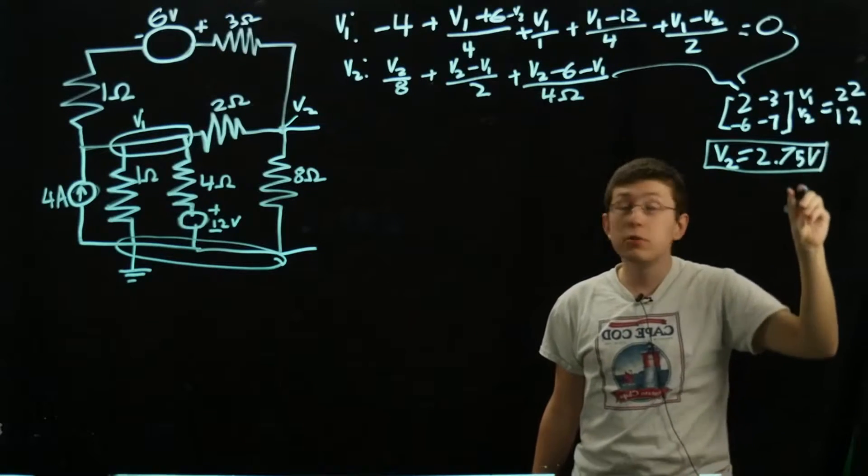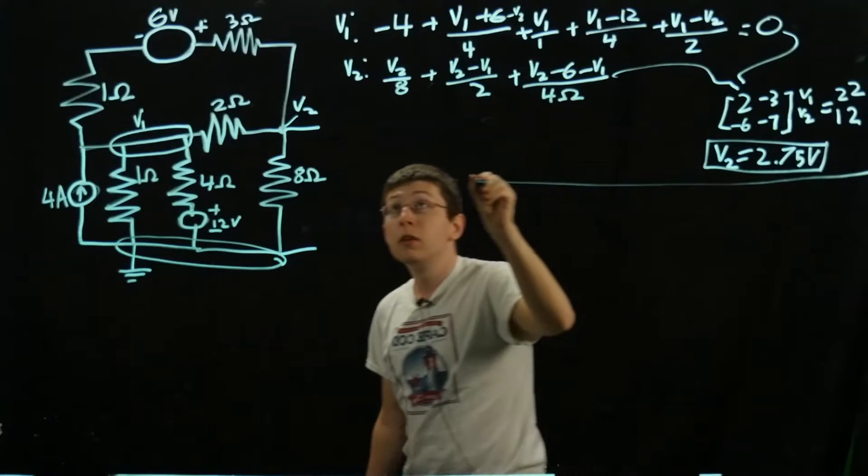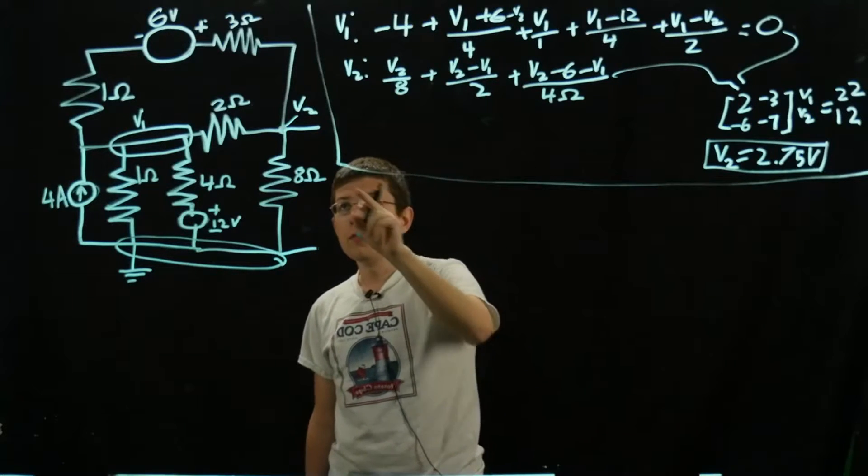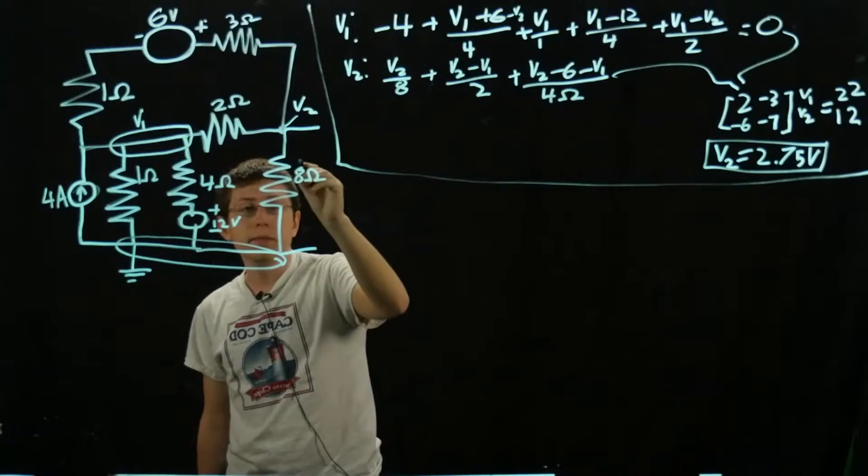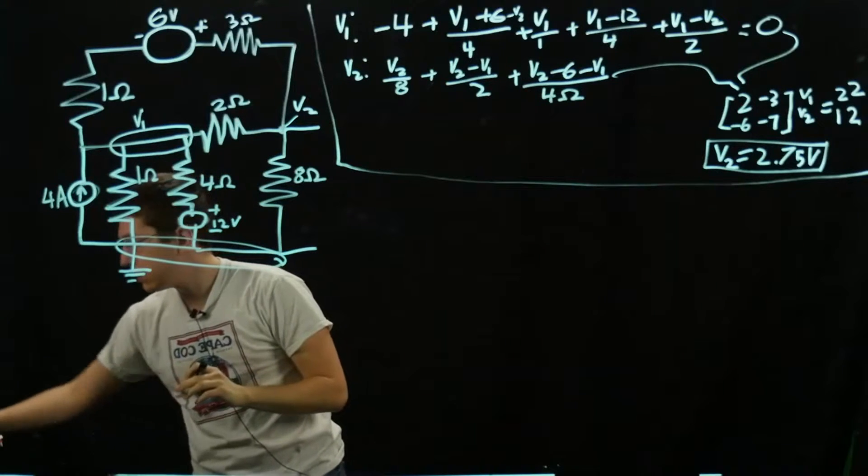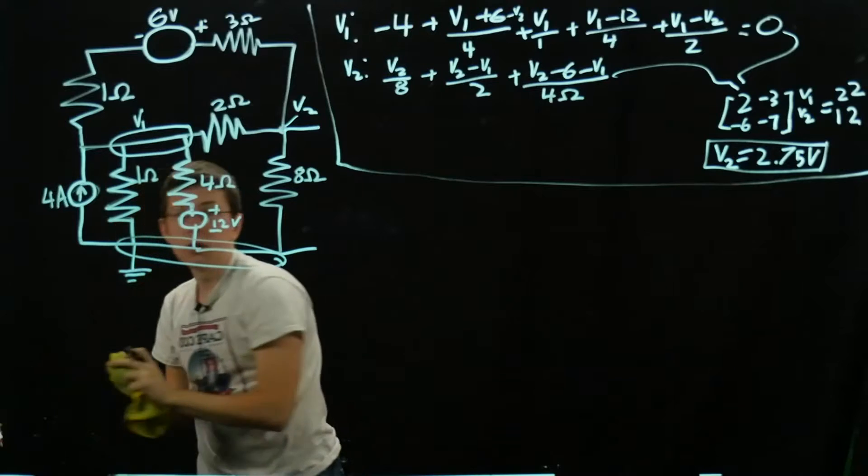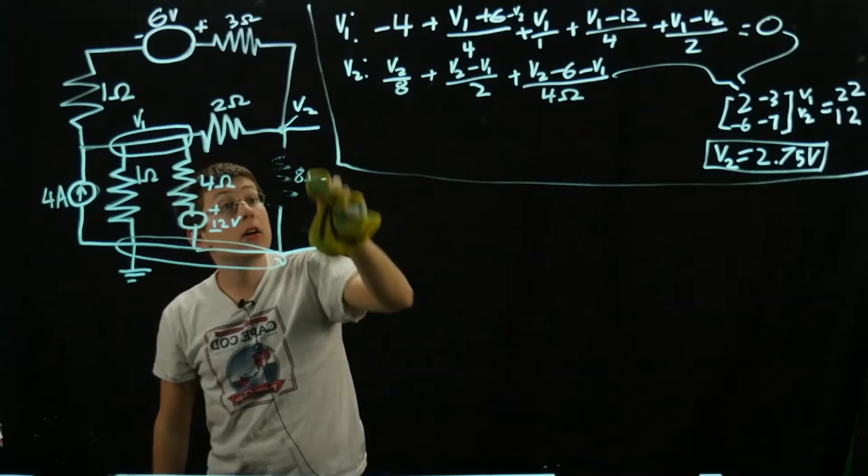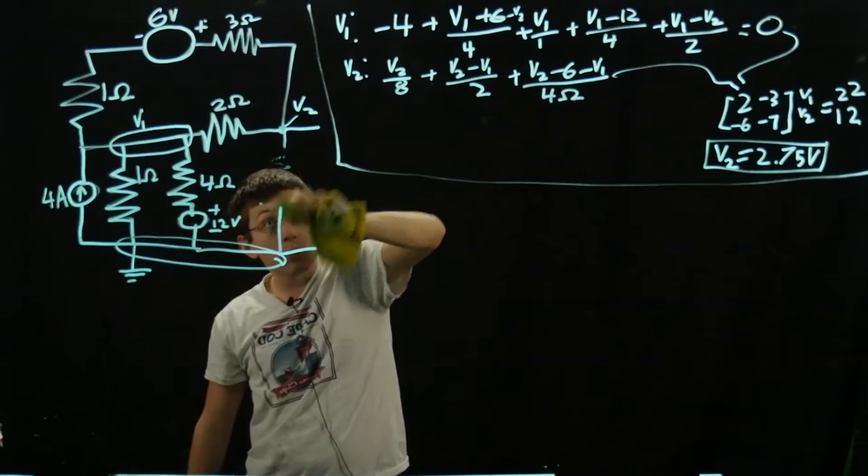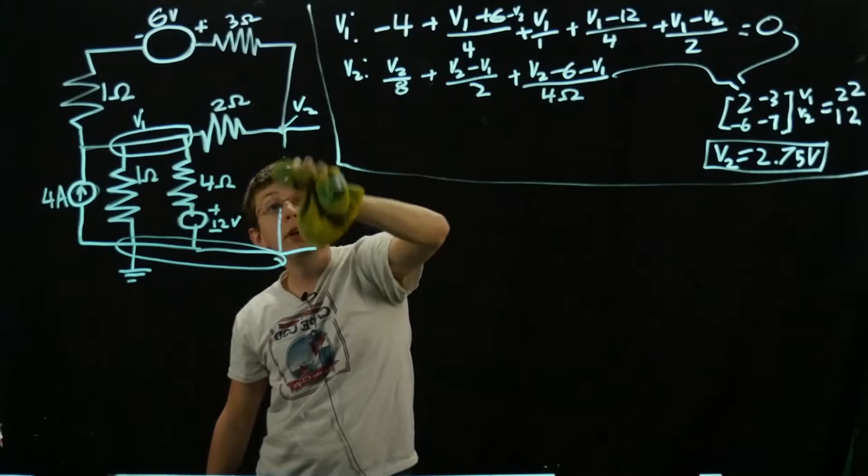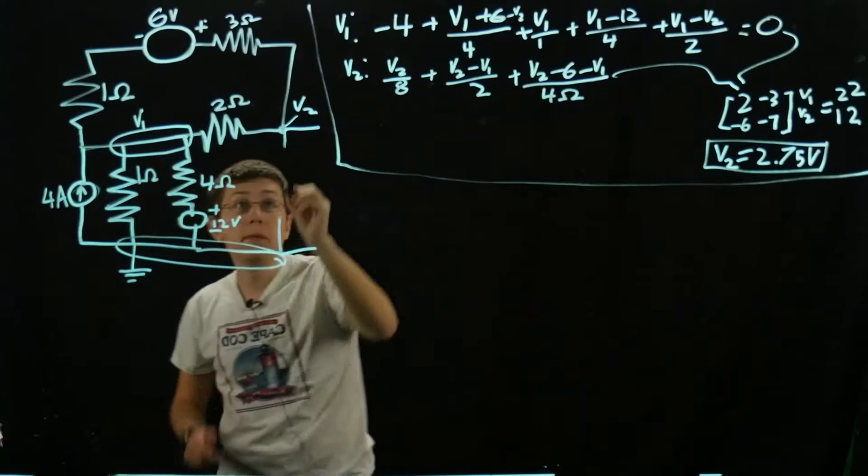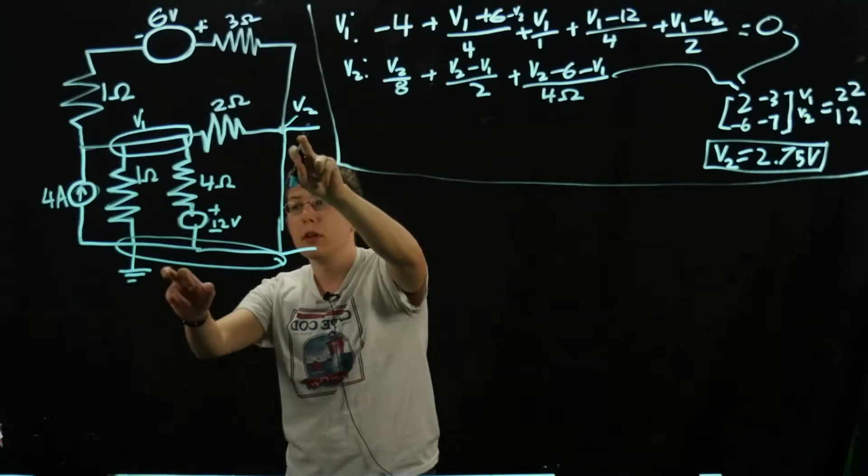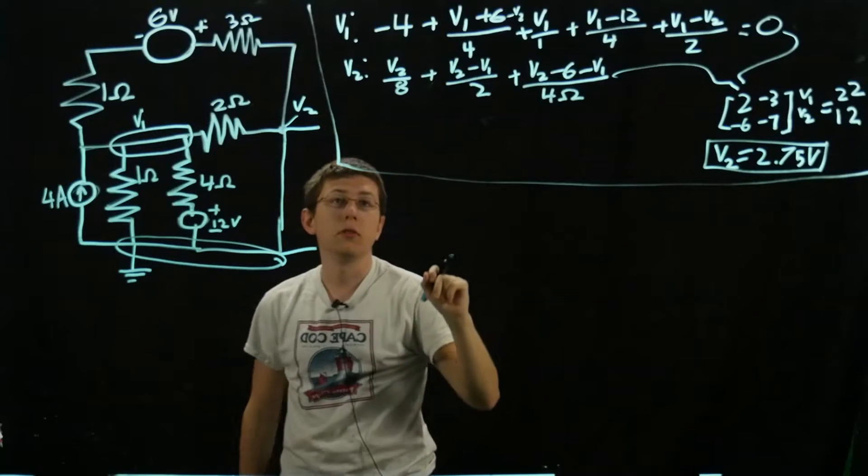We'll need to use this to find our Norton resistance. Now we have to focus on finding our short circuit current. I'm going to replace our resistor here with a short, and we'll move forward on finding that current. When I replace this resistor with a short, what happens now is V2 is now connected directly to ground, so V2 is just 0 volts.